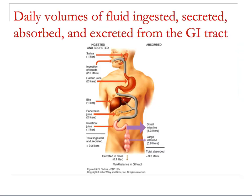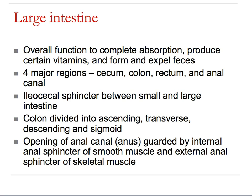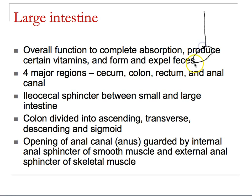Moving on to the large intestine: we have four major regions starting at the cecum because of the ileocecal valve, then cecum to colon to rectum to anal canal where the ileocecal sphincter allows the divide to occur. We have ascending, transverse, descending, and sigmoid colon. The opening has an internal anal sphincter — smooth muscle, which you can't control — and then the external anal sphincter, which you can control.